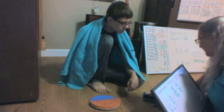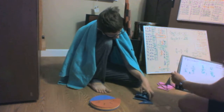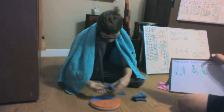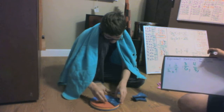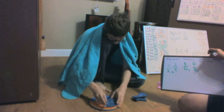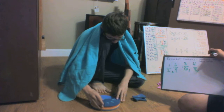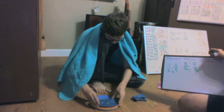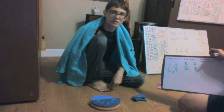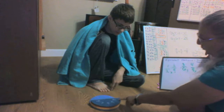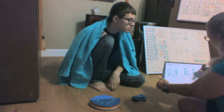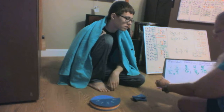Next comes our tenths. Can so many tenths be equivalent to a half? How many tenths are equivalent to a half? Let's count them: one, two, three, four, five. Five-tenths is the same as one-half.